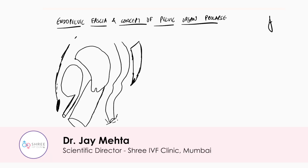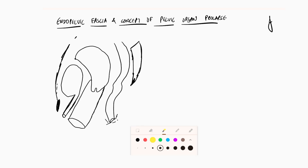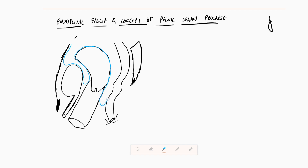In today's video we will be talking about endopelvic fascia. To understand what it is, let us understand how the peritoneum is lined. The peritoneum comes over the bladder — a large part of the bladder is a retroperitoneal organ — then it covers the uterus, forming what we call the uterovesical pouch, and then encompasses part of the pouch of Douglas. Every other structure located underneath this peritoneum has a beautiful coverage of connective tissue.